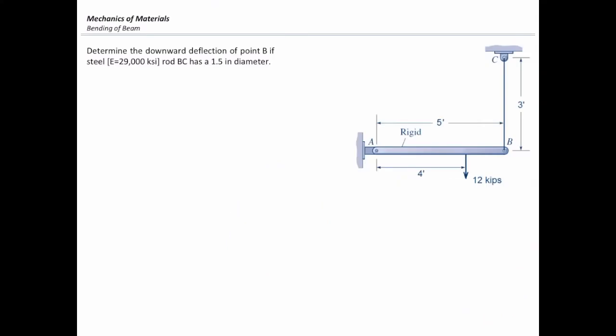The horizontal element is rigid. We learned that rigid means that it doesn't deform or deflect. It can just rotate around a pin support at A, and this rigid beam is subjected to a force of 12 kips, which is located 4 feet on the right side of pin A.